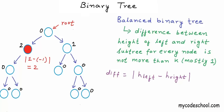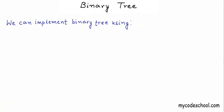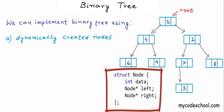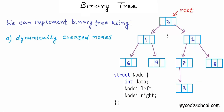We try to keep a tree balanced to ensure it is dense and its height is minimized, which minimizes the cost of operations that depend on height. The most commonly used way to store binary trees in memory is dynamically created nodes linked to each other using pointers or references. For a binary tree of integers in C or C++, we define a node with an integer data field and two pointer variables — one for the left child and one for the right child.